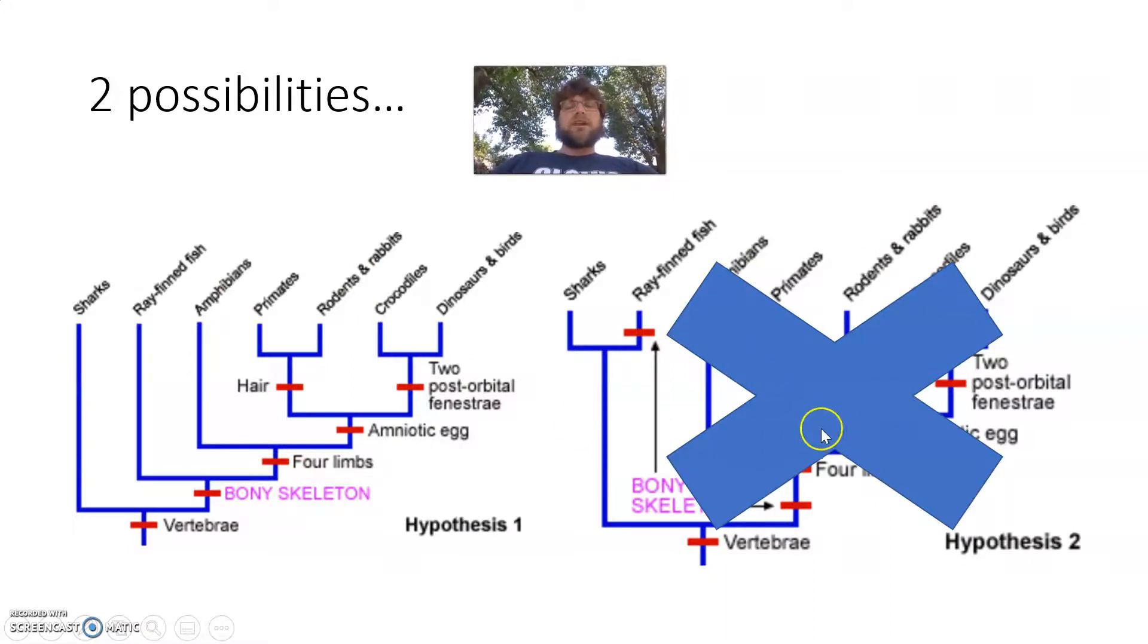Is it possible that this was actually the case, that a bony skeleton evolved twice? Yeah, it's possible. Now, this hypothesis makes sense. It's more logical that the bony skeleton evolved once in a population, and then from there, it has been modified over time.